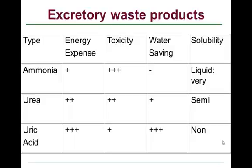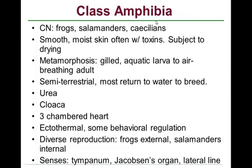Let's explore the first class in superclass Tetrapoda — class Amphibia. The word 'amphibia' comes from 'ampha,' meaning double, and 'bia,' as in biology, meaning lives. So amphibia means double lives, referring to the fact that amphibians typically have an aquatic larva and a terrestrial or semi-terrestrial adult. The common names include frogs and toads, salamanders and newts, and something called caecilians.